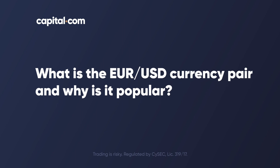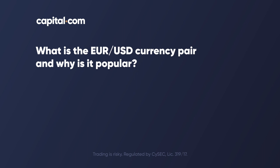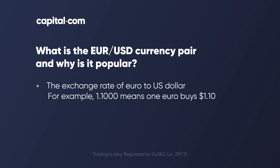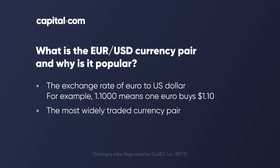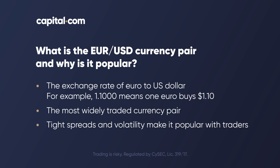What is the EURUSD currency pair and why is it so popular with traders? Simply put, it's the exchange rate of the euro to the US dollar. For example, if the rate is 1.1000, it means one euro buys you one dollar and ten cents, and this moves around during the day. It is the most widely traded currency pair. The large volumes mean the spread is tight, so the cost of trading is incredibly low, and there's normally guaranteed volatility during the day, week, and month — these movements and low trading costs make it popular with traders.